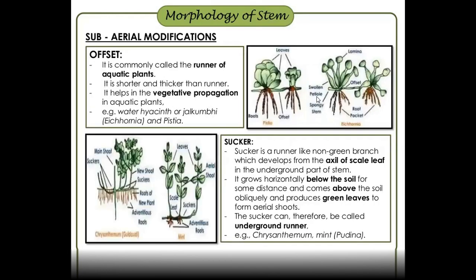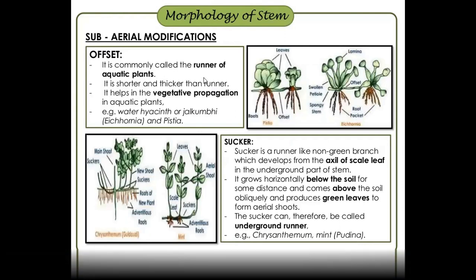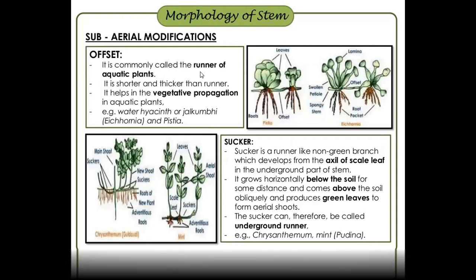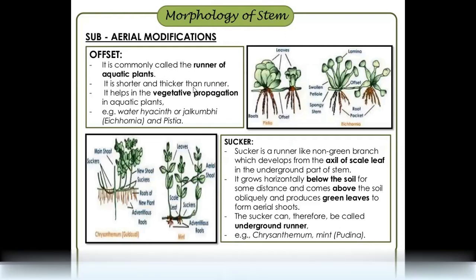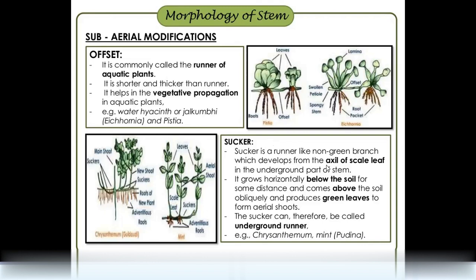Offset — the best example is Terror of Bengal. This is an aquatic runner. Runners are characteristics of vegetative propagation and are enormous. Examples of offset plants include water hyacinth, gel kumbi, and Pistia.